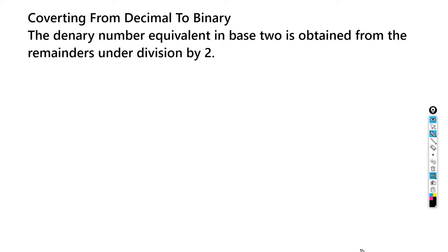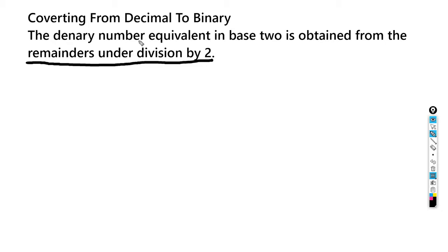Hey guys, what's up? So today we're actually going to be looking at converting from decimal to binary. It says the denary number equivalent in base two is obtained from the remainders on the division by two. So what does that exactly mean? It means that we're going to divide a base 10 number by two multiple times in order to get the binary equivalent.